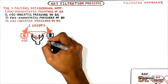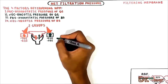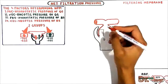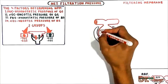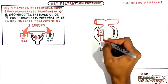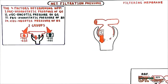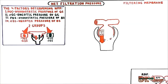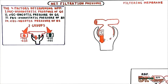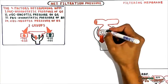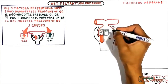The forces promoting filtration are hydrostatic pressure of the glomerular capillary and oncotic pressure of Bowman's space. The hydrostatic pressure of the glomerular capillary is 45 mmHg. This is a very strong force and under normal conditions is the main factor that determines GFR. The second factor which determines net filtration pressure is oncotic pressure in glomerular capillaries.